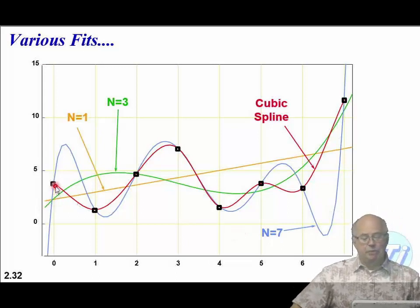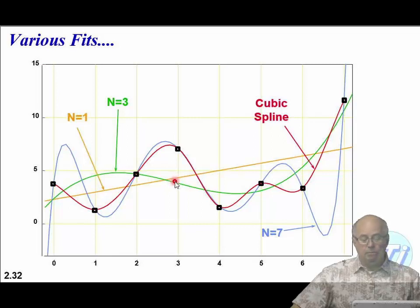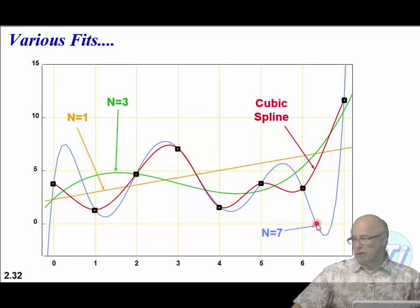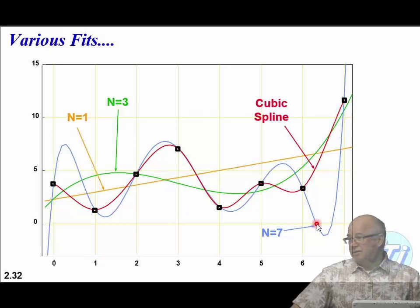Here's an example showing the same dataset with four different fits: a best-fit straight line, a best-fit cubic in green, a seventh-order polynomial in blue, and a cubic spline in red. Which one fits best? Again, the answer is: we don't know — we don't know the underlying science. We had this lesson twice this morning.